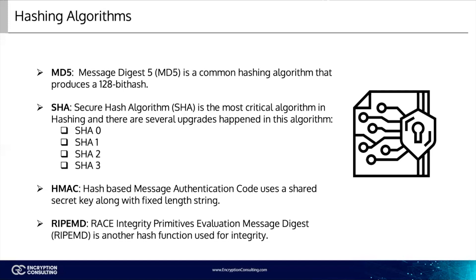HMAC — another method used to provide integrity — is a hash-based message authentication code. An HMAC is a fixed-length string of bits similar to other hashing algorithms such as MD5 and SHA1, known as HMAC-MD5 and HMAC-SHA1. However, it also uses a shared secret key to add some randomness to the result, and only the sender and receiver know the secret key.